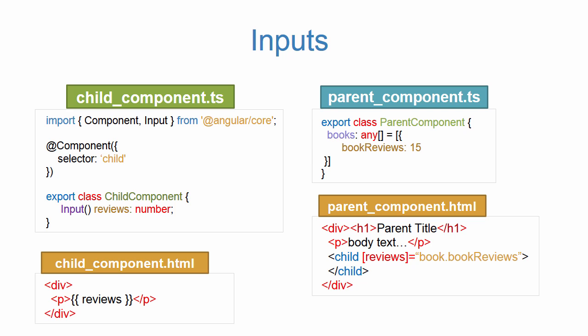We wrap the 'reviews' property we defined inside square brackets and set it equal to a value inside of the parent. So now our reviews child property has been assigned the value of book reviews. Inside our child HTML file, we can now reference the 'reviews' property which will be populated with the parent value, so using interpolation we would see the number 15 displayed in our child template. Let's now practice using inputs inside of our application.